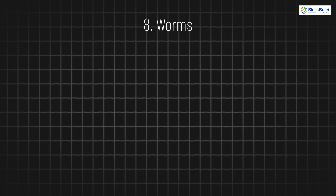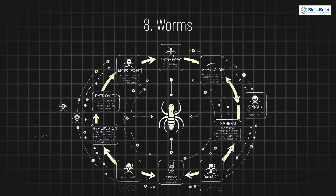8. Worms. Worms are self-replicating programs that spread across networks without any user intervention. Once they infiltrate a system, they can cause widespread damage and move from one machine to another, creating a virtual pest infestation.